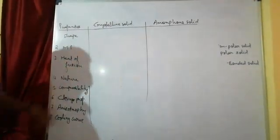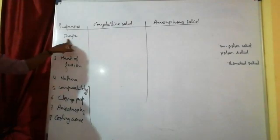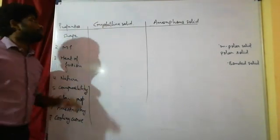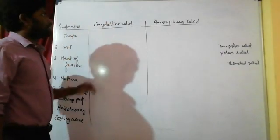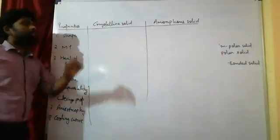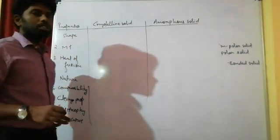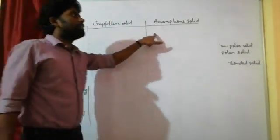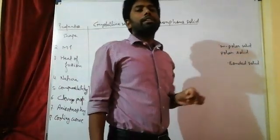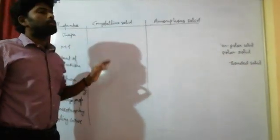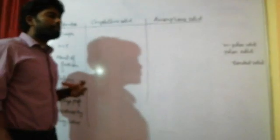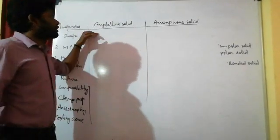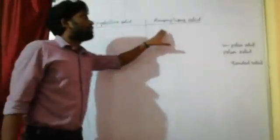We will draw a table with three columns: properties, crystalline solids, and amorphous solids. Point number 1 — shape: crystalline solids have a definite geometrical shape, such as a cubic form. Amorphous solids have an irregular shape.